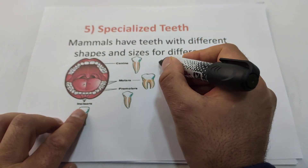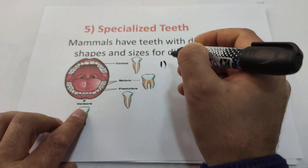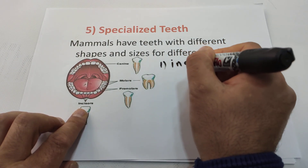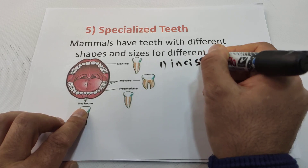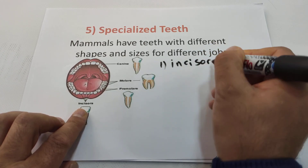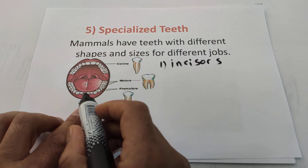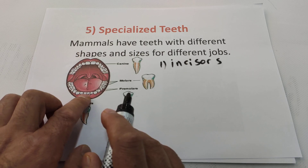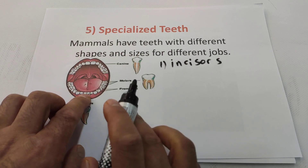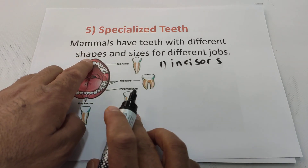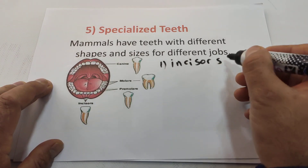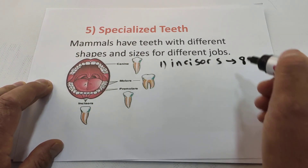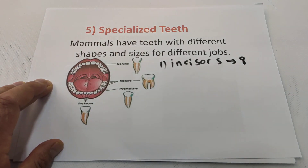Incisors — the first kind of teeth. There are four incisors on top and four on the bottom. Human beings totally have eight incisors teeth.